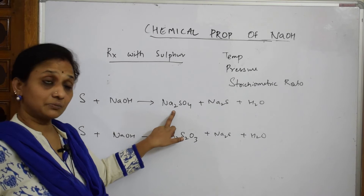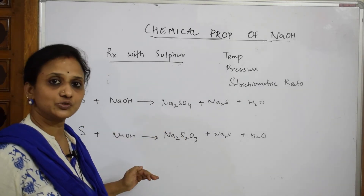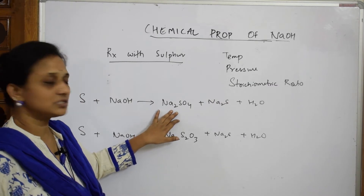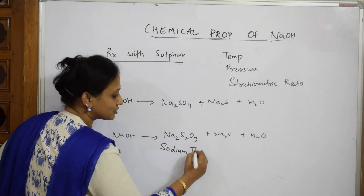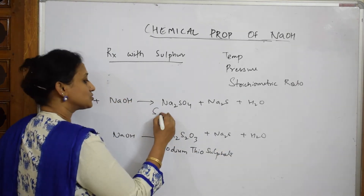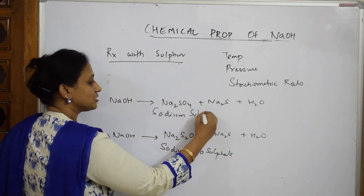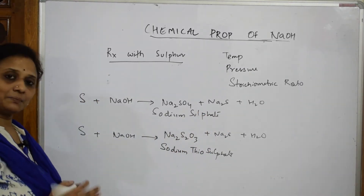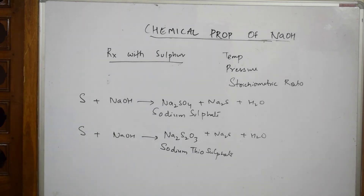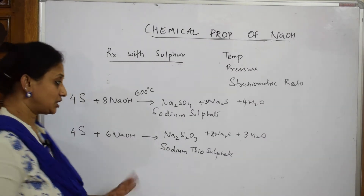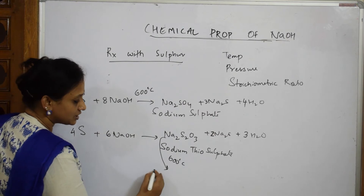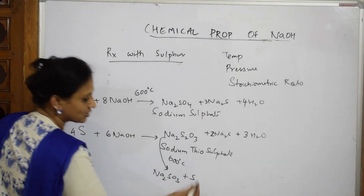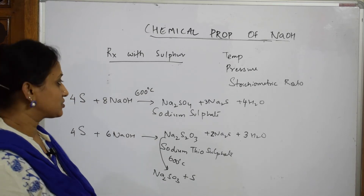When balancing, the stoichiometric ratio is different in both cases. The first product is sodium sulfate; the second is sodium thiosulfate — these are two different products. Remember: sodium sulfate vs. sodium thiosulfate. Now, if sodium thiosulfate is treated at around 600 degrees centigrade, it breaks up further into sodium sulfate and colloidal sulfur.